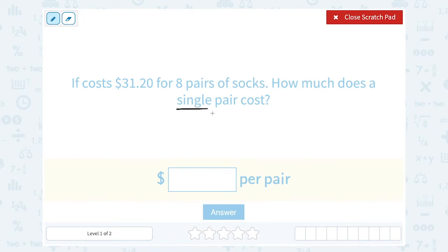A single pair means just one pair. So if we know the price for eight pairs, we would want to take that price and divide it by eight. $31.20 divided by eight to figure out how much a single pair or just one pair costs.